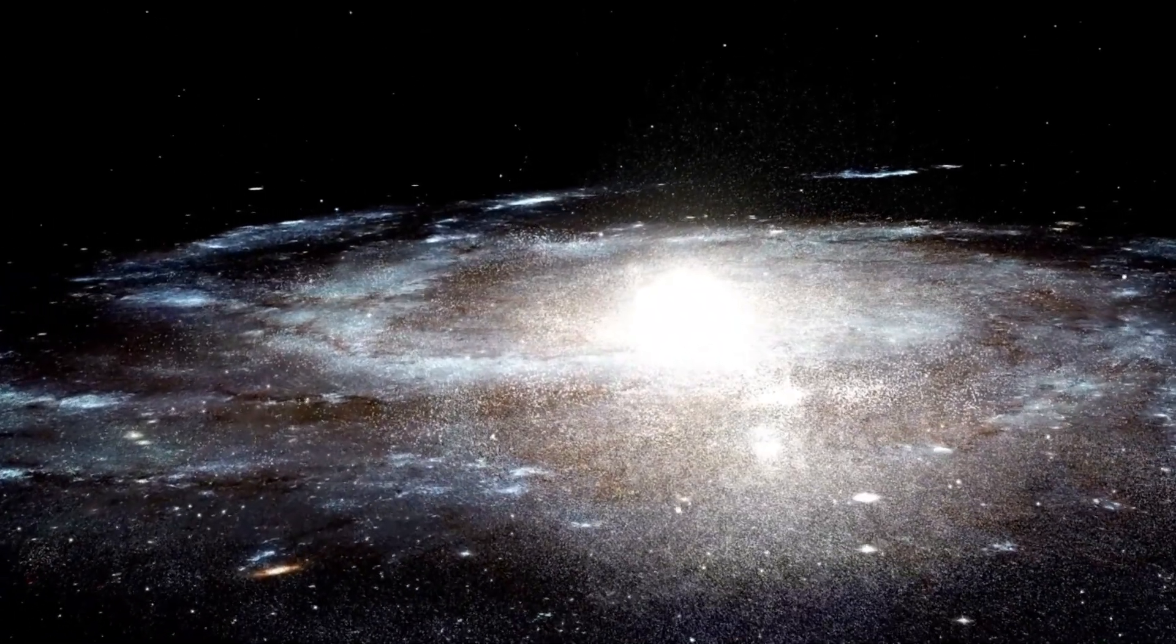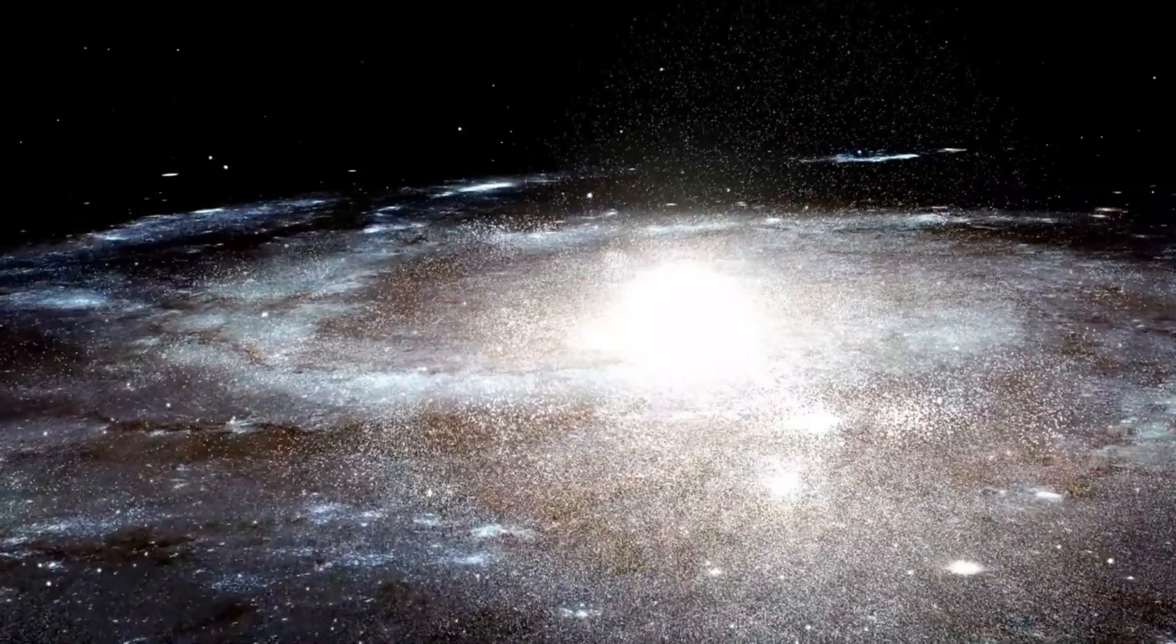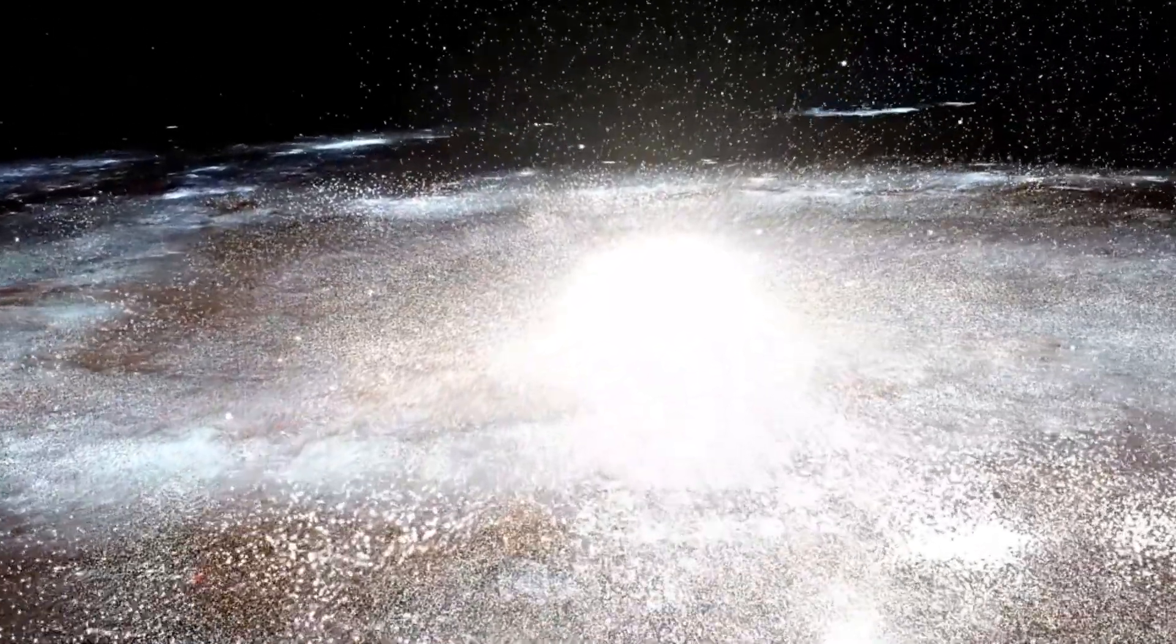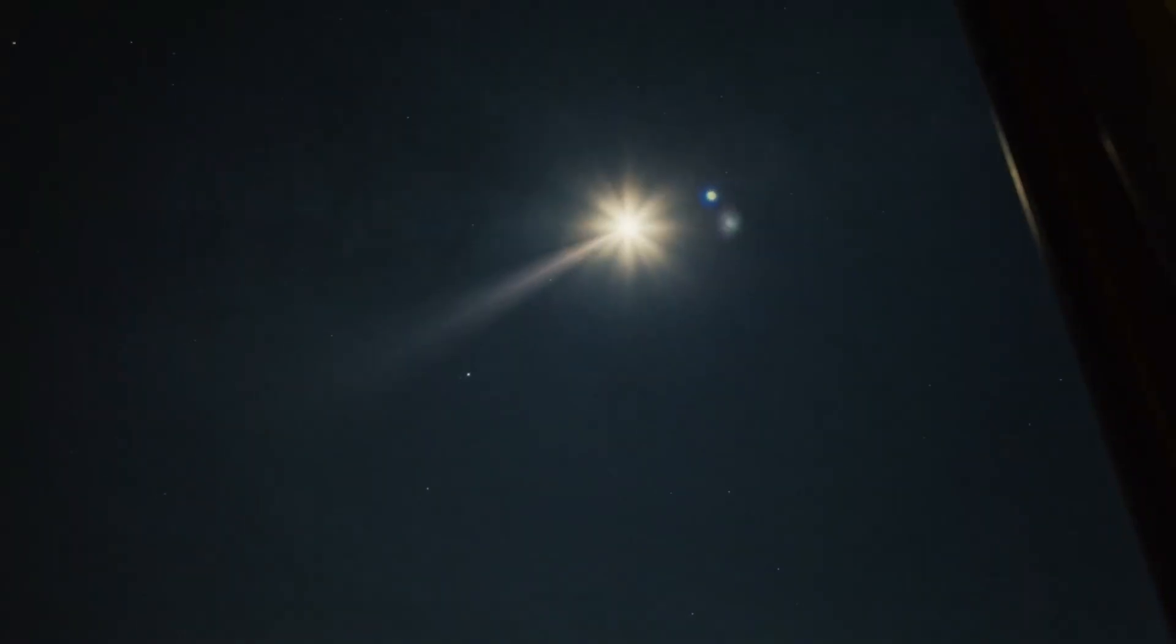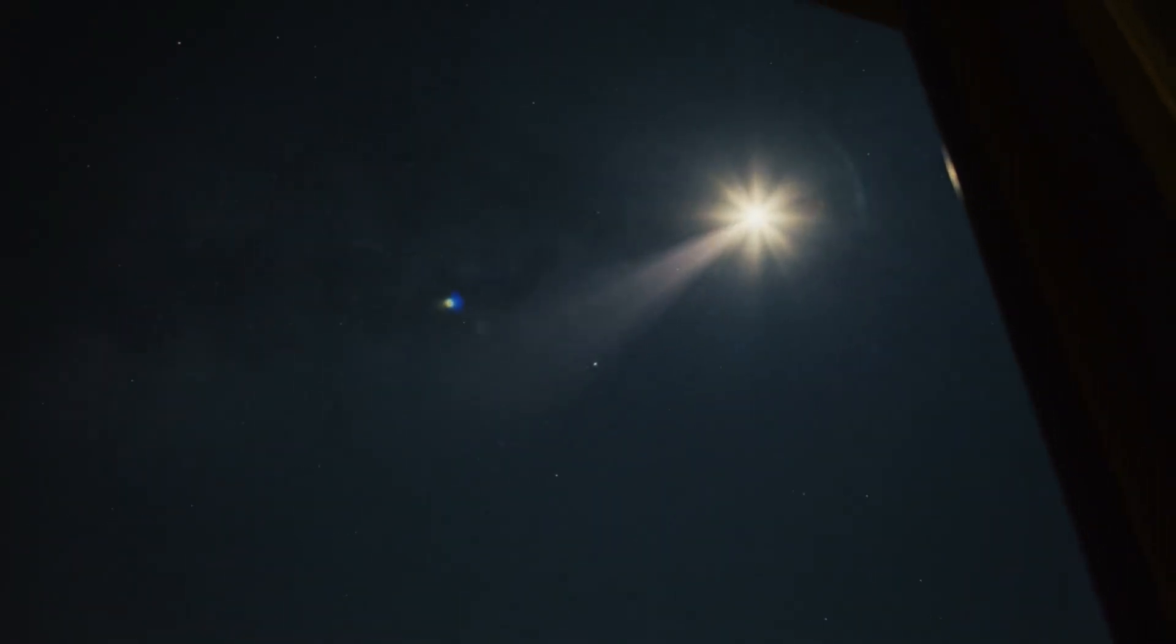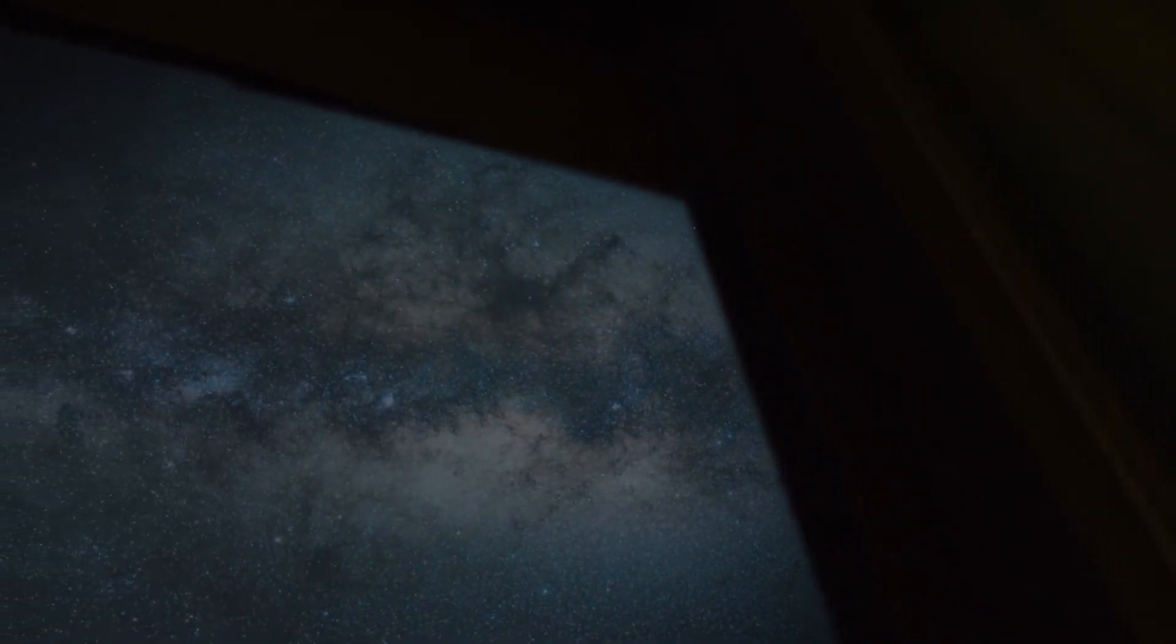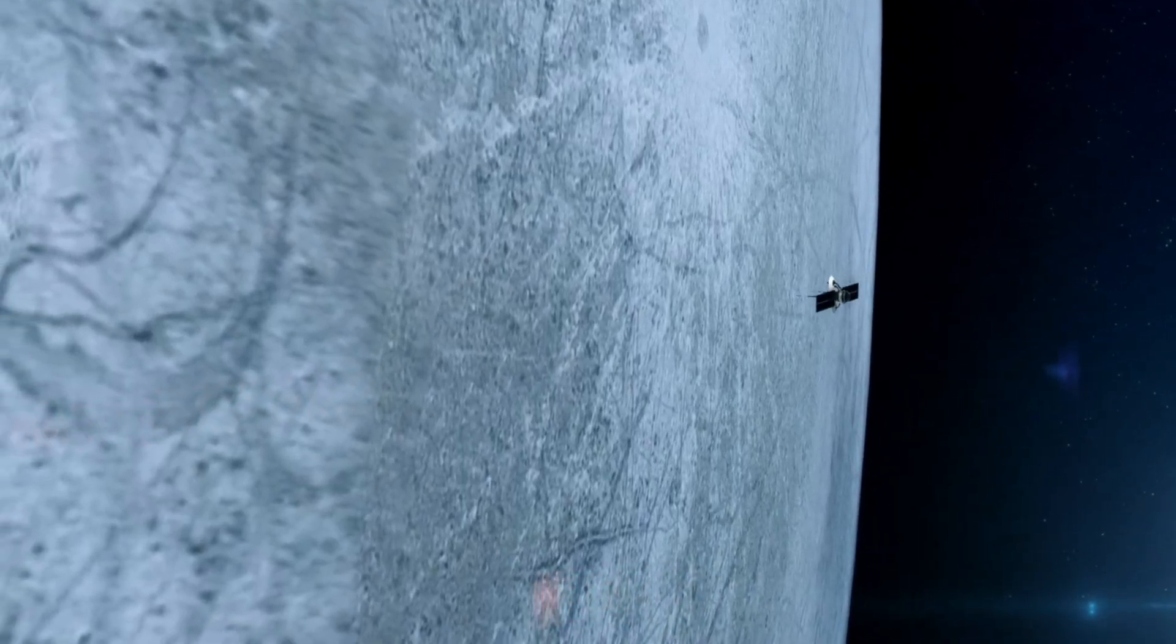Still, Voyager carries more than instruments and sensors. On board is the famous golden record, a 12-inch gold-plated copper disc containing the sounds and images of earth. Curated by Carl Sagan and his team, it includes greetings in 55 languages, music ranging from Mozart to Louis Armstrong, and images of human life, cities, nature, and animals. It is not merely a repository of information. It is a message of goodwill. Our attempt to say, across the stars, we are here. We wish to know you.